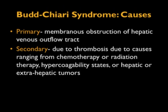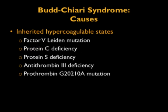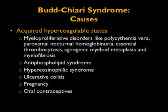The primary cause is membranous obstruction of the hepatic venous outflow tract. Secondary causes include thrombosis due to radiation or chemotherapy, hypercoagulability states, or hepatic or extra-hepatic tumors. Inherited hypercoagulability states include Factor V Leiden mutation, protein C deficiency, and protein S deficiency. Acquired hypercoagulability states include myeloproliferative disorders like polycythemia vera, PNH, thrombocytosis, AMM, and myelofibrosis, as well as antiphospholipid syndrome and hypereosinophilic syndrome.